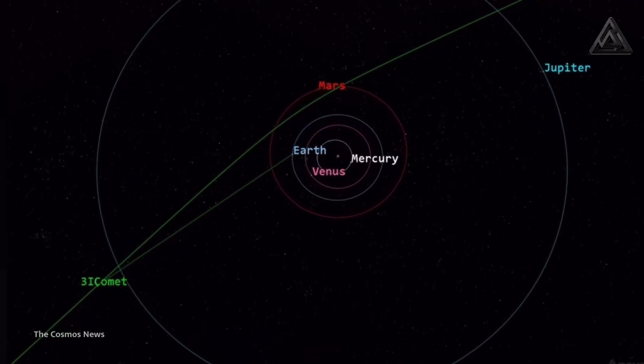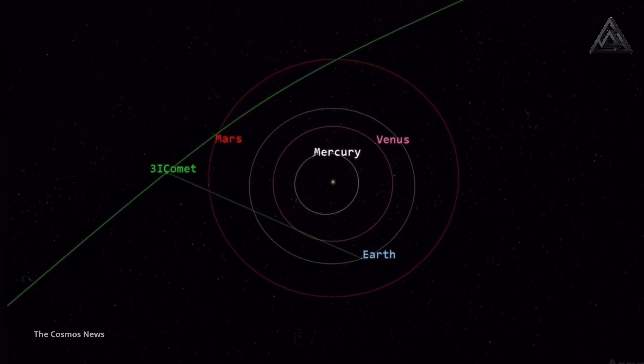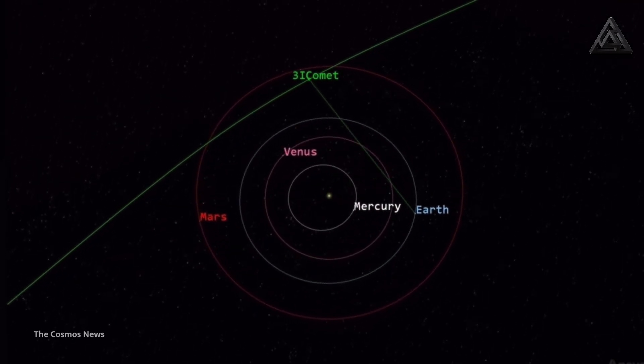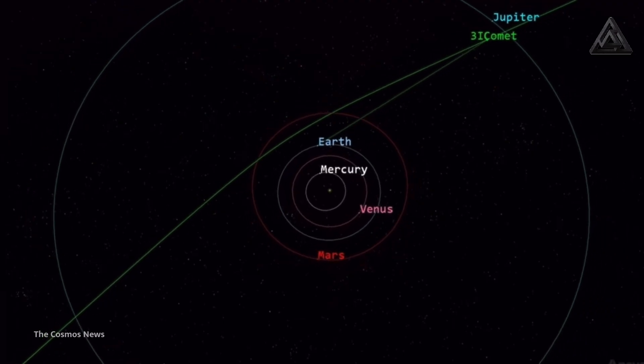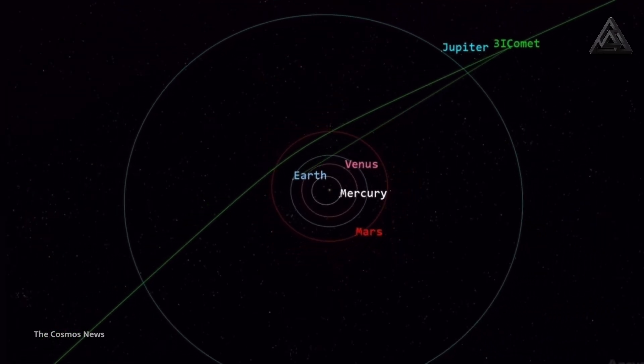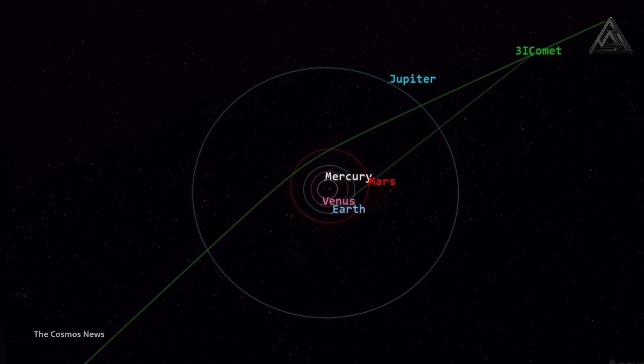If this object came from far away, then what we see may represent chemistry and physics under conditions unlike our solar system. Such findings could help refine models of interstellar chemistry and even guide future missions designed to sample or observe similar visitors in greater detail.